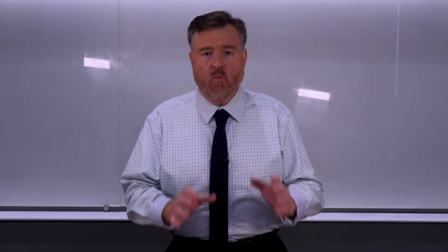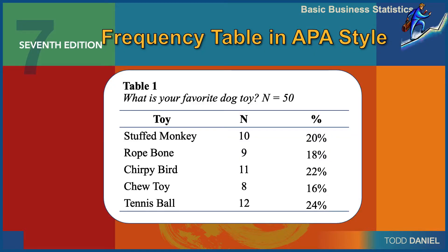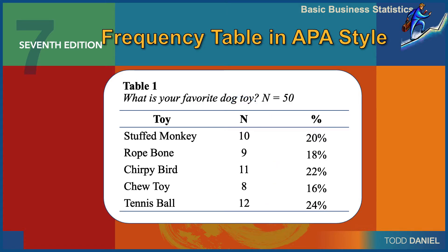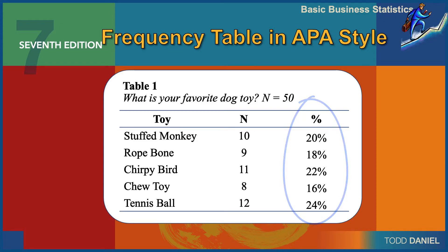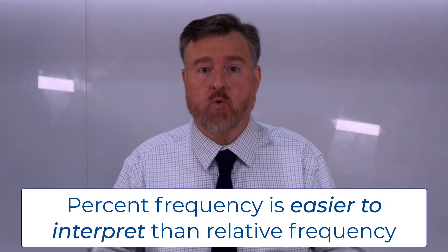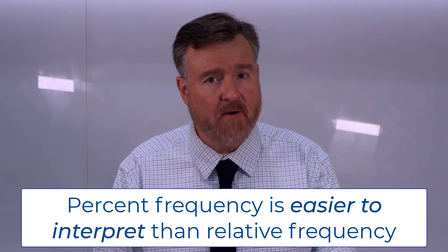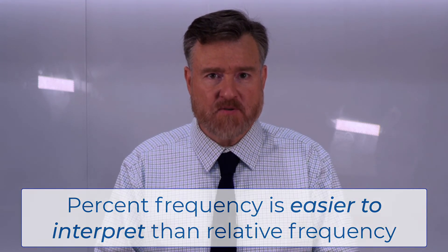Let's summarize what we've learned about frequency tables. Although I mentioned relative frequency, it is unlikely you will ever see that in a frequency table. Most commonly, you will see simple frequency, labeled either as n or count, and percent frequency. This gives us the raw number of scores in each category, which we can compare to the total number of scores in our data set, as well as the percentage of those scores. Comparing percentages between datasets is much easier than comparing raw scores, and that is the advantage of percent frequency.